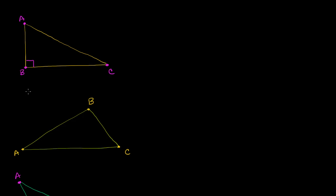We now know how to find the area of rectangles. What I want to do in this video is think about how we can find the areas of triangles. We're starting here with a right triangle — it has a 90-degree angle right over here. Right triangle ABC. And let's think about how we can find its area.